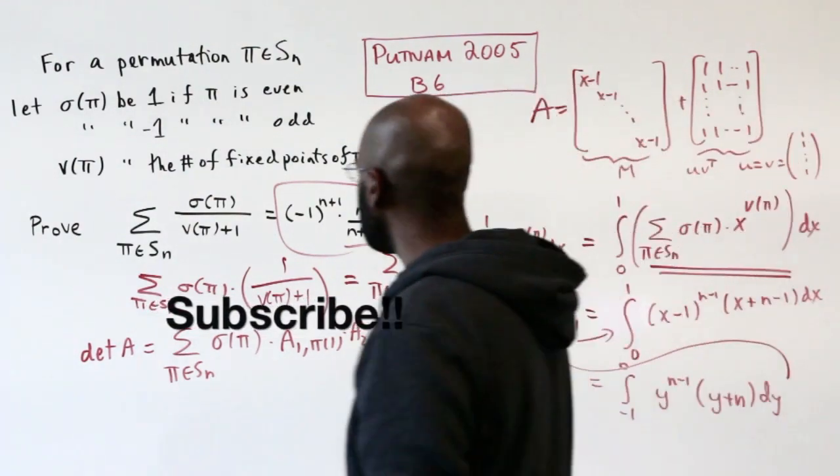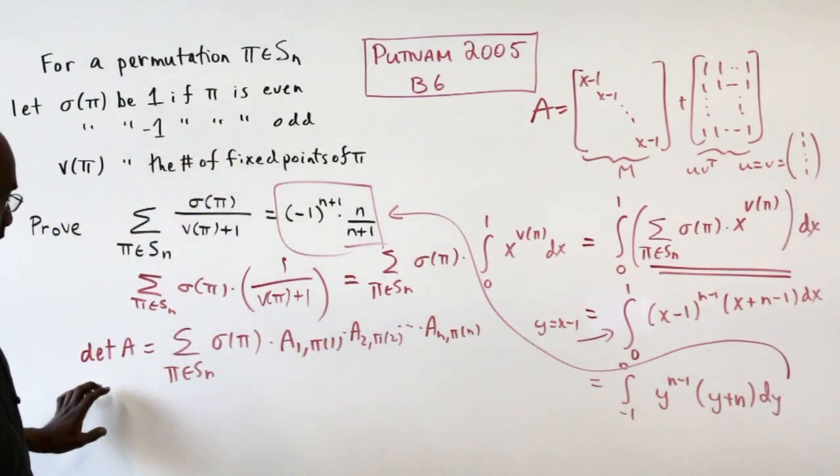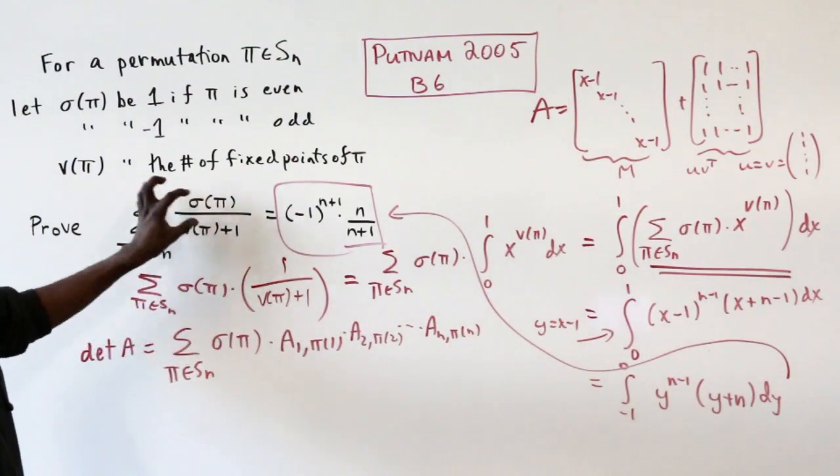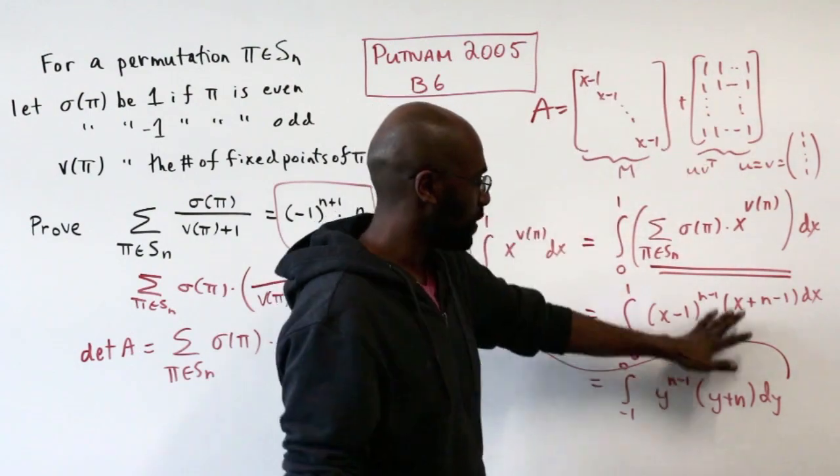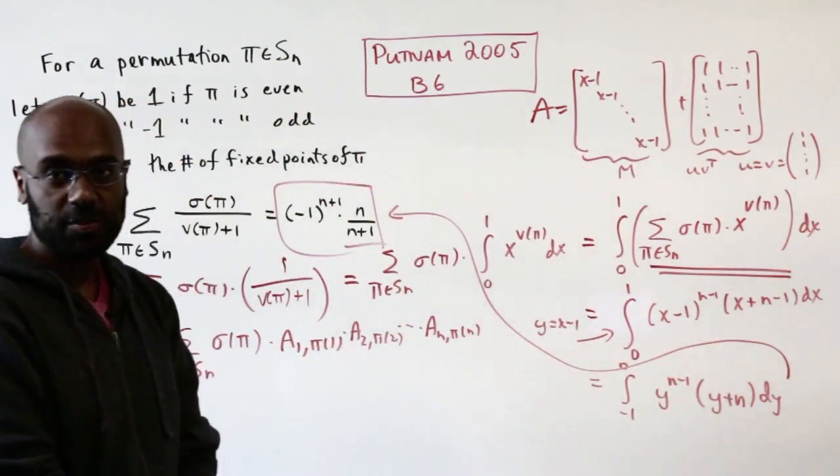I think the moral of the story with this problem is when you see something that might look familiar, like the determinant expansion using permutations, try to set up your problem in a way that will allow you to use it. We're able to do that together with the matrix determinant lemma to figure out the answer to this problem.